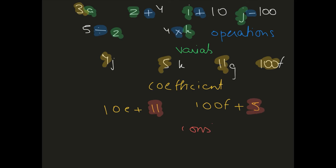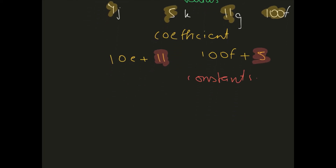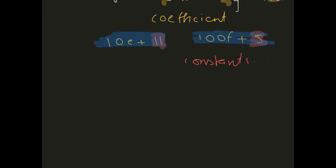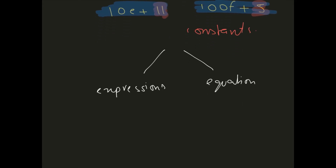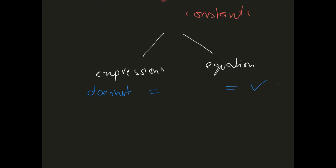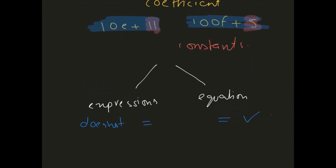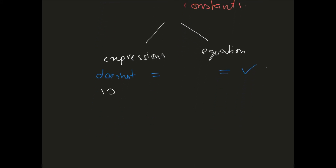This form is called an expression. We have two types: expressions and equations. The difference is that an expression does not have an equal-to sign, while an equation does have an equal-to sign. So 10e plus 11 is an expression because it has no equal-to sign, but if we write 10e plus 11 equals 0, then it becomes an equation because it has an equal-to sign.